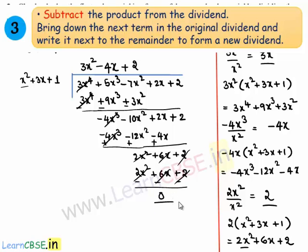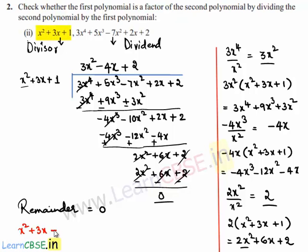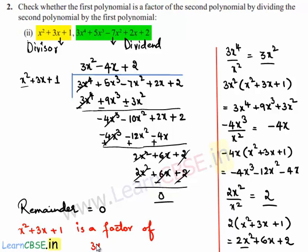Now we can say that the remainder is 0. If the remainder is 0 when the second polynomial is divided by the first polynomial, we can say that the first polynomial, which is x² plus 3x plus 1, is a factor of the second polynomial, which is 3x⁴ plus 5x³ minus 7x² plus 2x plus 2.